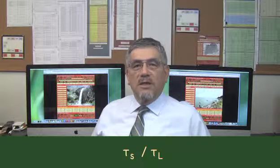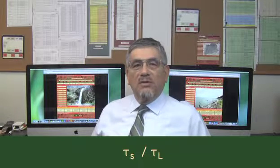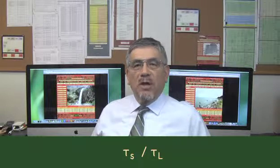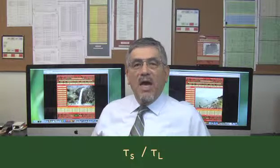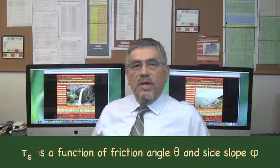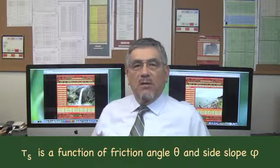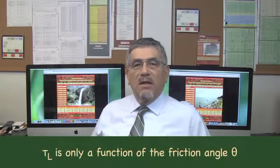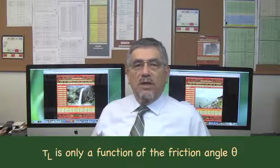The Tractor-Stress method uses the Tractor-Stress ratio. The Tractor-Stress ratio is the ratio of Tractor-Stress on the channel sides, tau sub S, to Tractor-Stress on the channel bottom, that is, on level ground, tau sub L. Tau sub S is a function of friction angle of the material and side slope of the channel, while tau sub L is only a function of the friction angle.